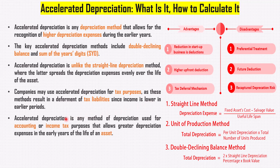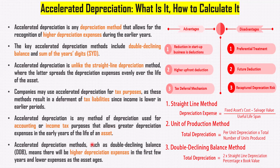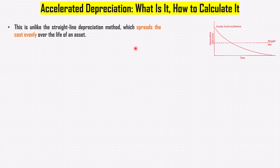Accelerated depreciation is any method of depreciation used for accounting or income tax purposes that allows greater depreciation expenses in the early years of the life of an asset. Accelerated depreciation methods, such as double declining balance, DDB, means there will be higher depreciation expenses in the first few years and lower expenses as the asset ages. This is unlike the straight-line depreciation method, which spreads the cost evenly over the life of an asset.